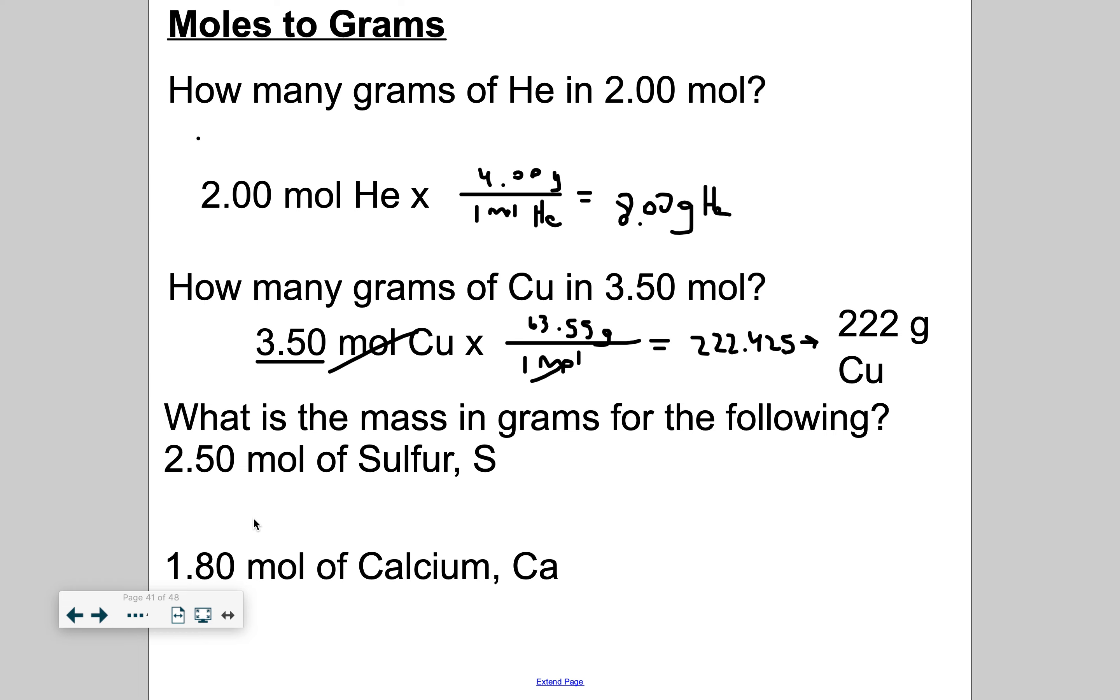What is the mass in grams for 2.05 moles of sulfur? I'm going to set up my conversion factor. One mole of sulfur is going to go on the bottom. And then the molar mass of sulfur is 32.06. So I'm going to go 2.05 times 32.06, and I get 80.15. But with sig figs, we're going to go to 3. So it'll be 80.2 grams of sulfur.